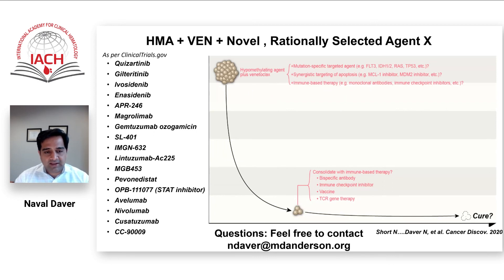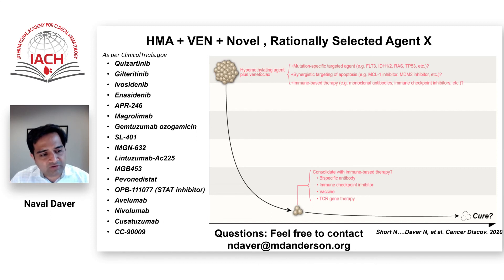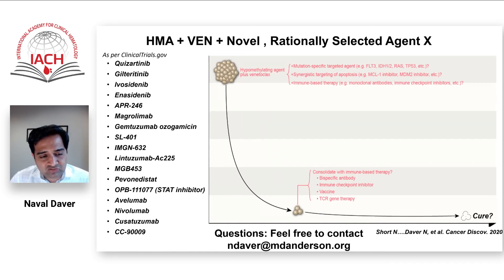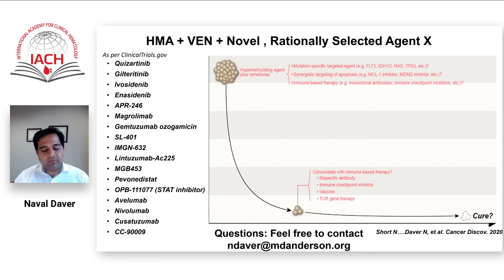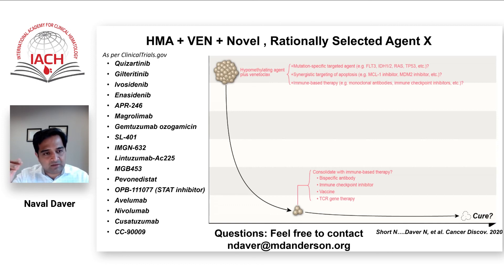In summary, the next steps for us are how we can improve on HMA-venetoclax-based treatments. There are many different targeted therapies, immunotherapies, CD47-based approaches, and other novel approaches being added based on biological preclinical rationale to the HMA-venetoclax backbone. We believe many of these strategies will help us take the survival curve we have with HMA-venetoclax-based treatment — at about 30–35% — higher, closer to hopefully 60–70%, which is our goal. And with that, thank you very much for listening.